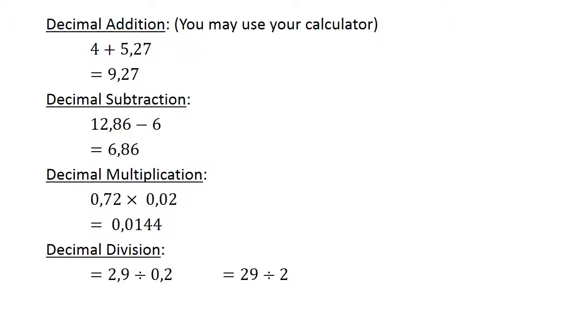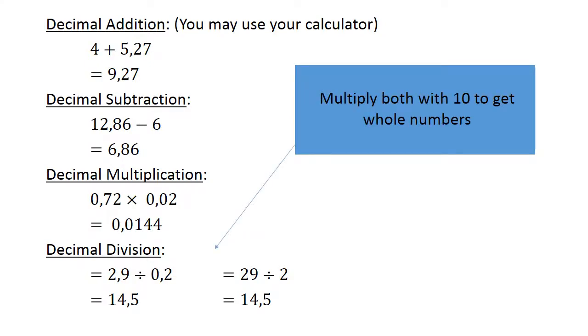Decimal division: 2.9 divided by 0.2. Multiply both with 10 to get whole numbers. 29 divided by 2 equals 14.5.